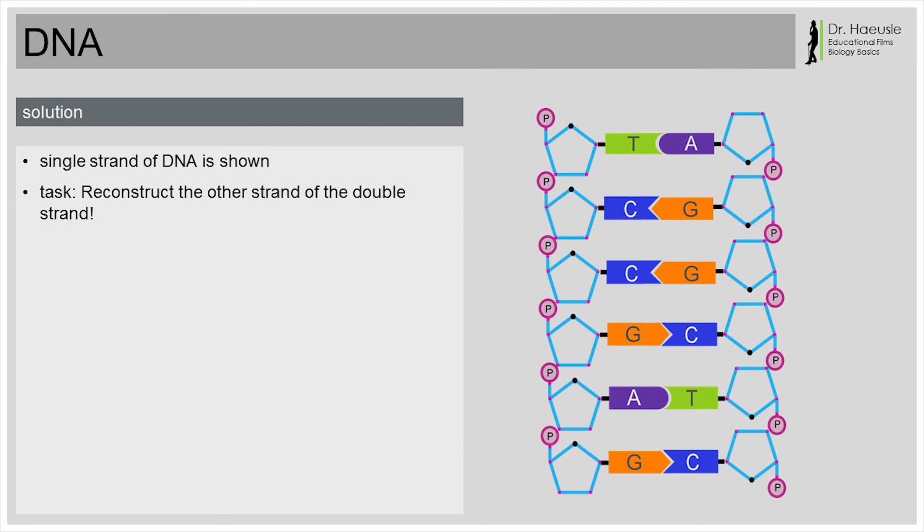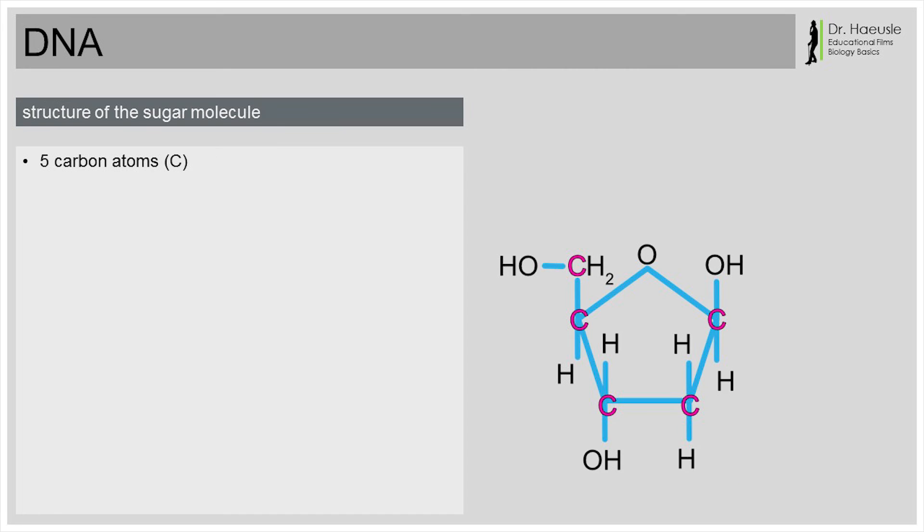To explain this, we'll have to take a closer look at the structure of the nucleotides. To be more precise, we have to take a closer look at the sugar molecules. This is the chemical structure of the sugar. That looks really complicated. Yes, but for what we want to explain, only the carbon atoms are important. They have the abbreviation C. As you can see, the sugar molecule has 5 carbon atoms. They are numbered, beginning on the right and going clockwise. They are called 1' carbon, 2' carbon, 3' carbon, 4' carbon and 5' carbon.